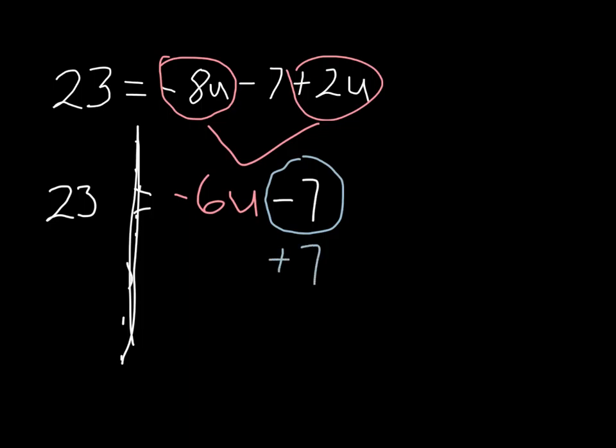We're going to add 7 here so that these will cancel out. But like I showed earlier, there's two sides of the equation, so whatever I do to one side I have to do to the other. Since I add 7 to cancel, I'm going to add 7 to the 23 over there and get my result.